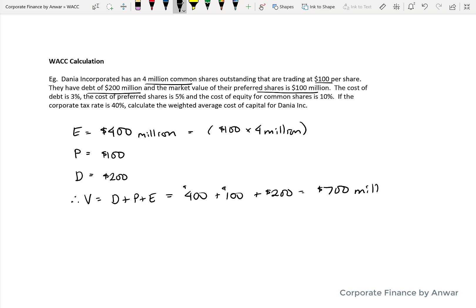So that works out to $400 million of equity, $100 million of preferred shares, and $200 million of debt. So the company's value is $700 million.